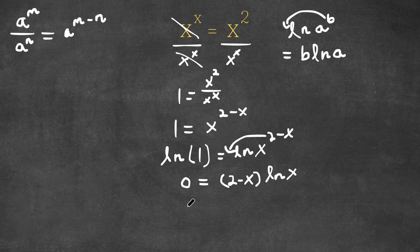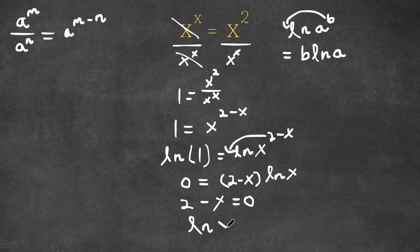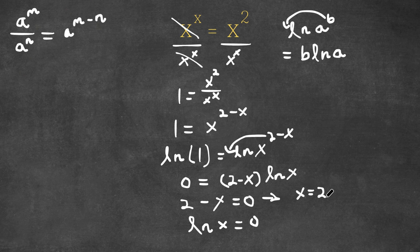Now this gives us two equations. We have 2 minus x is equal to 0, and we also have ln x is equal to 0. For 2 minus x equals 0, x is simply equal to 2. So that is one solution.